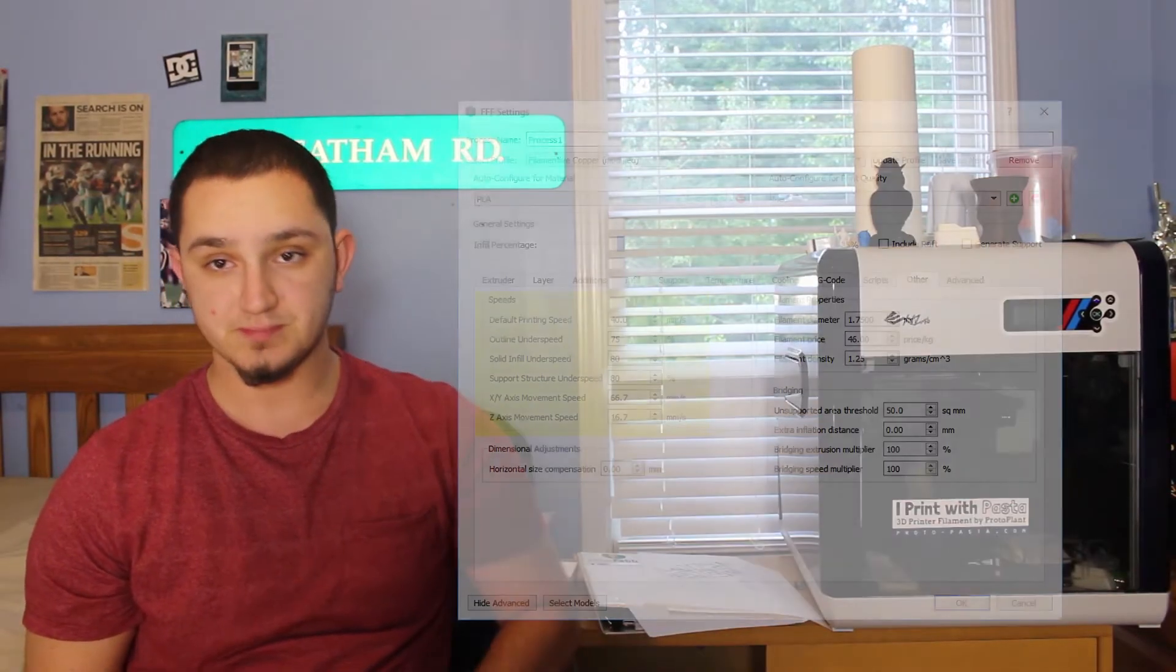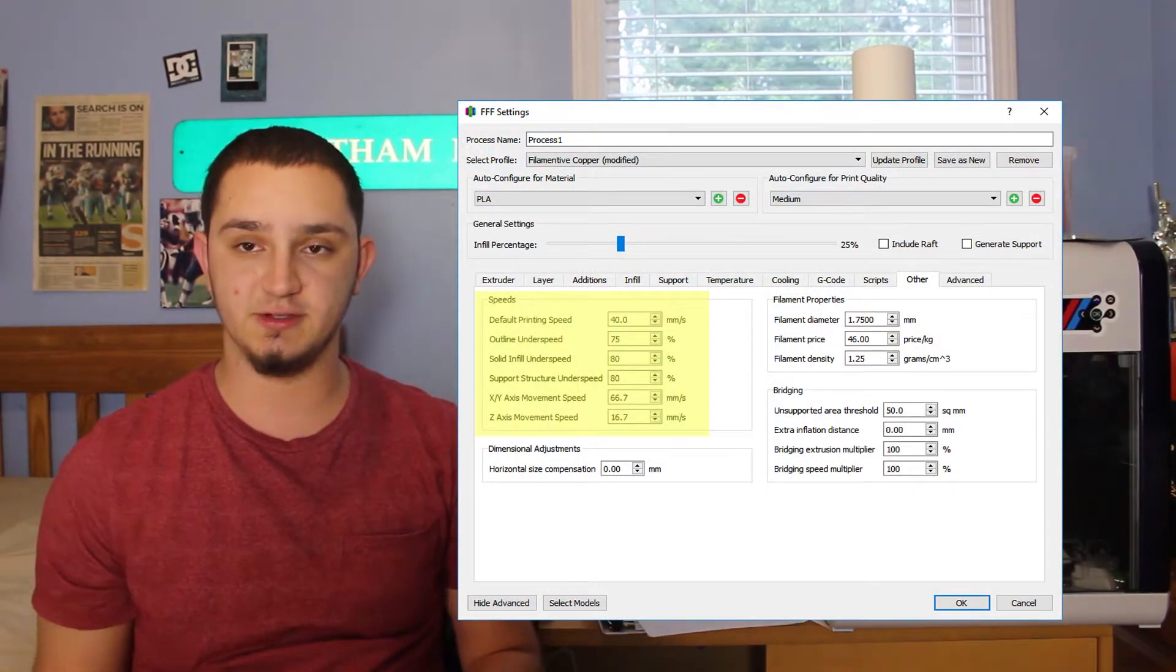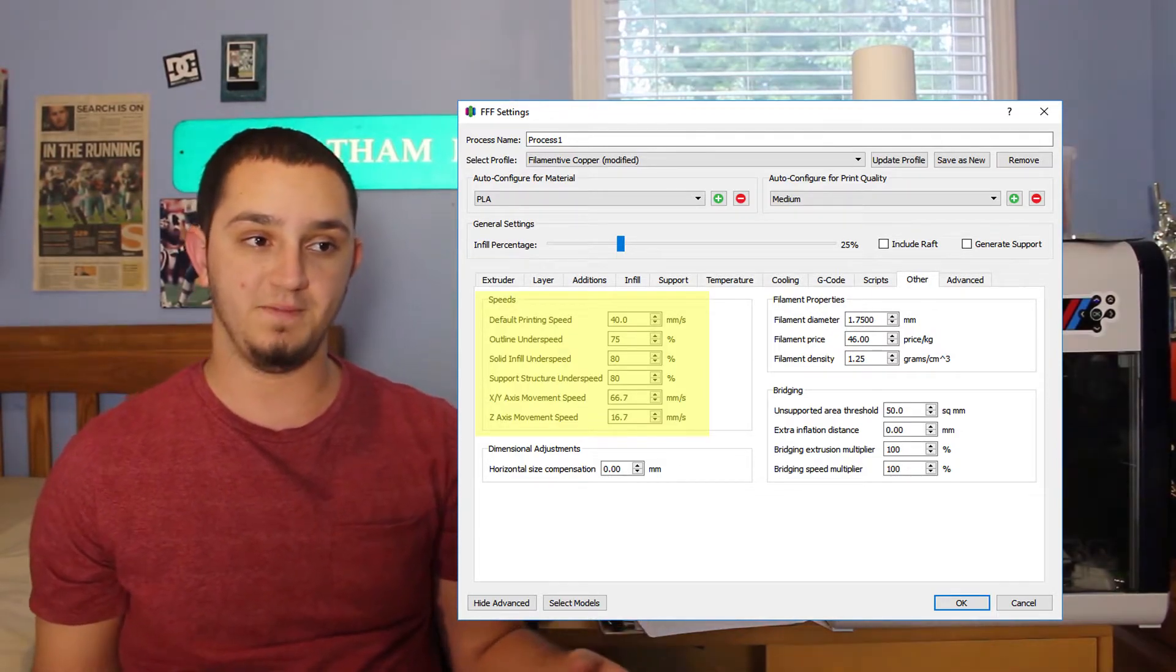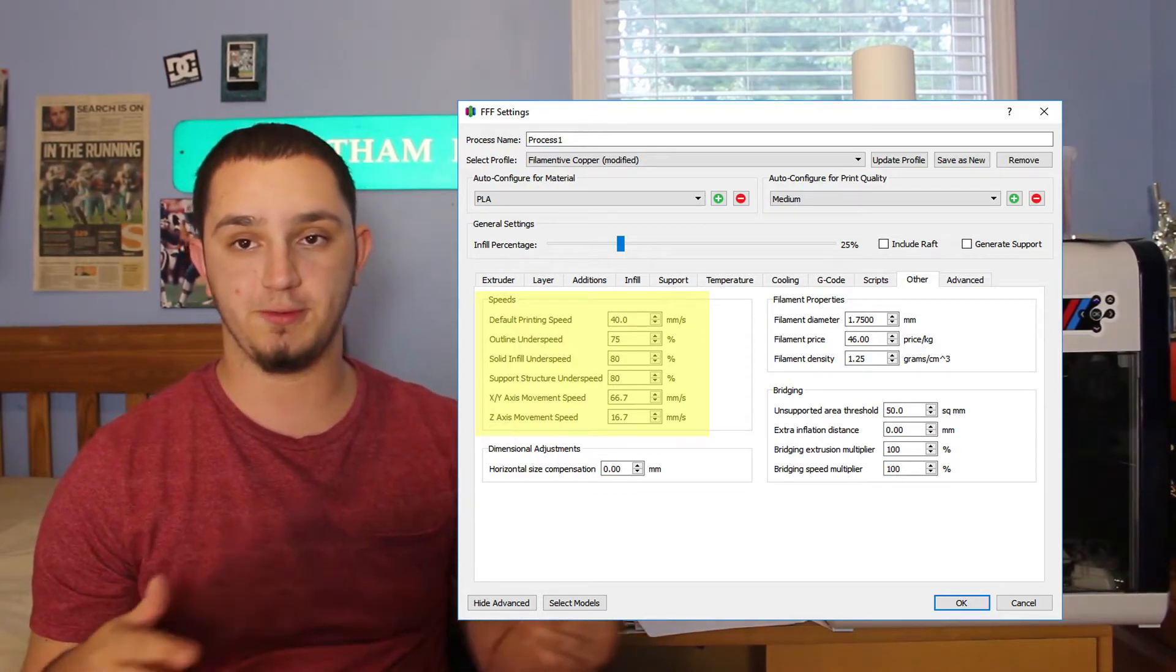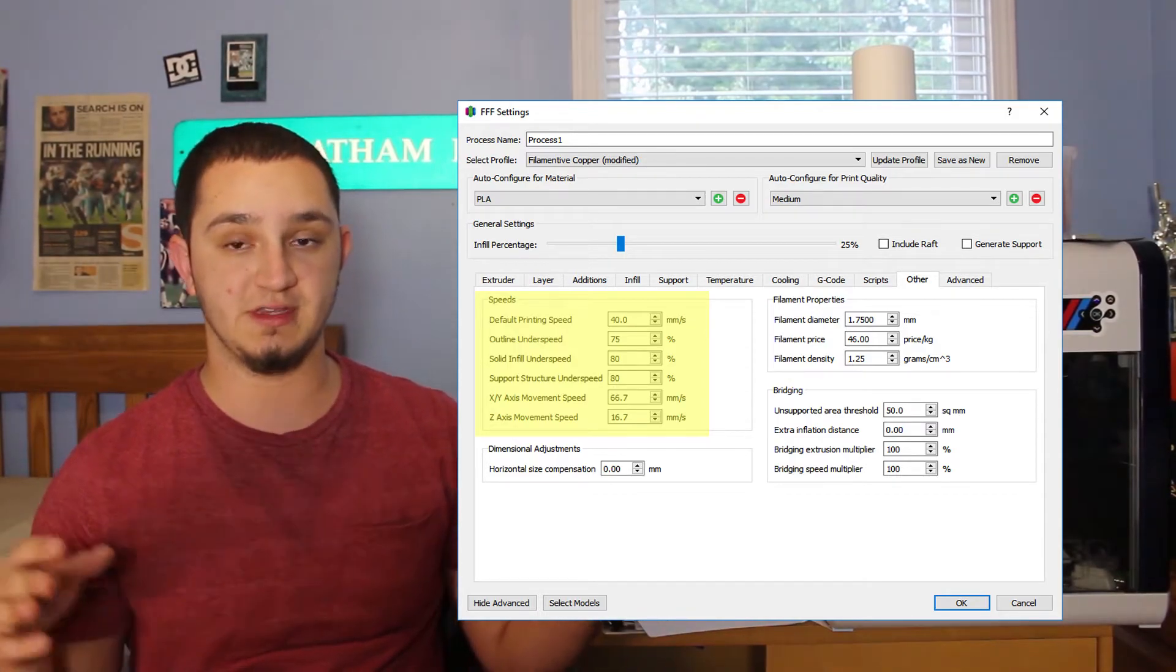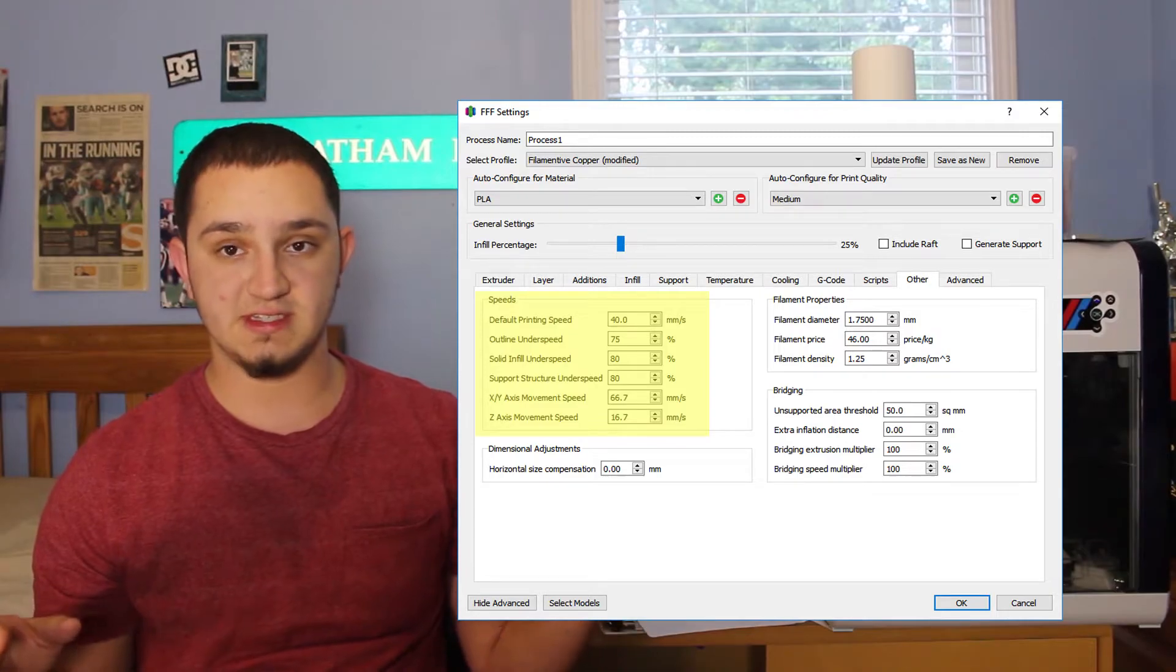Another important aspect is the print speed, and there are a few things that can contribute to the speed that you set your printer at. As a kind of base, I did all this on my Robo 3D with a 0.4 hardened nozzle with a V6 E3D V6 hotend, so I kind of kept that as a standard.